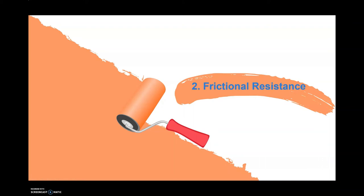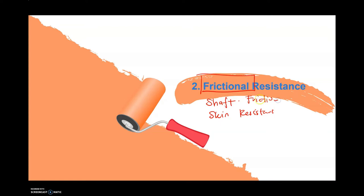Hi everyone, this is the next part of analysis in pile bearing capacity. The next element in determining the ultimate pile bearing capacity is frictional resistance. Remember, sometimes we use the term frictional resistance, sometimes shaft resistance, and sometimes skin friction — these are the same concept.